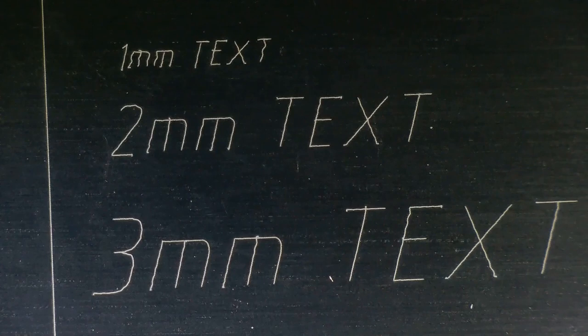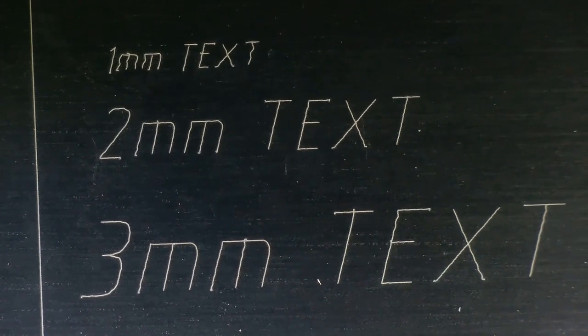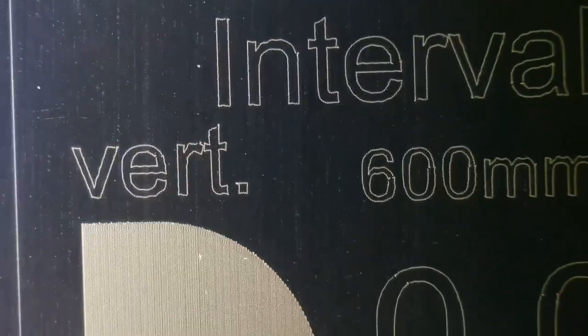Even the smallest 1mm text is easily readable. This will come in handy for engraving very small details on jewelry. The focus spot size is 0.05 by 0.05 mm, which is by far the smallest so far.